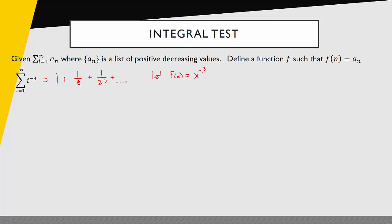Graphically I can see the relationship between the series and my function. I'm going to draw a coordinate system where the horizontal axis is n and the vertical axis is a sub n, the terms of my series. When n equals 1, I will plot a sub 1 which is 1. When n equals 2, I will plot a sub 2 which will be 1 eighth. When n equals 3, I'll get a sub 3, and so on and so forth. Basically the terms of the series are all these points, and the function is a function that goes through these points.